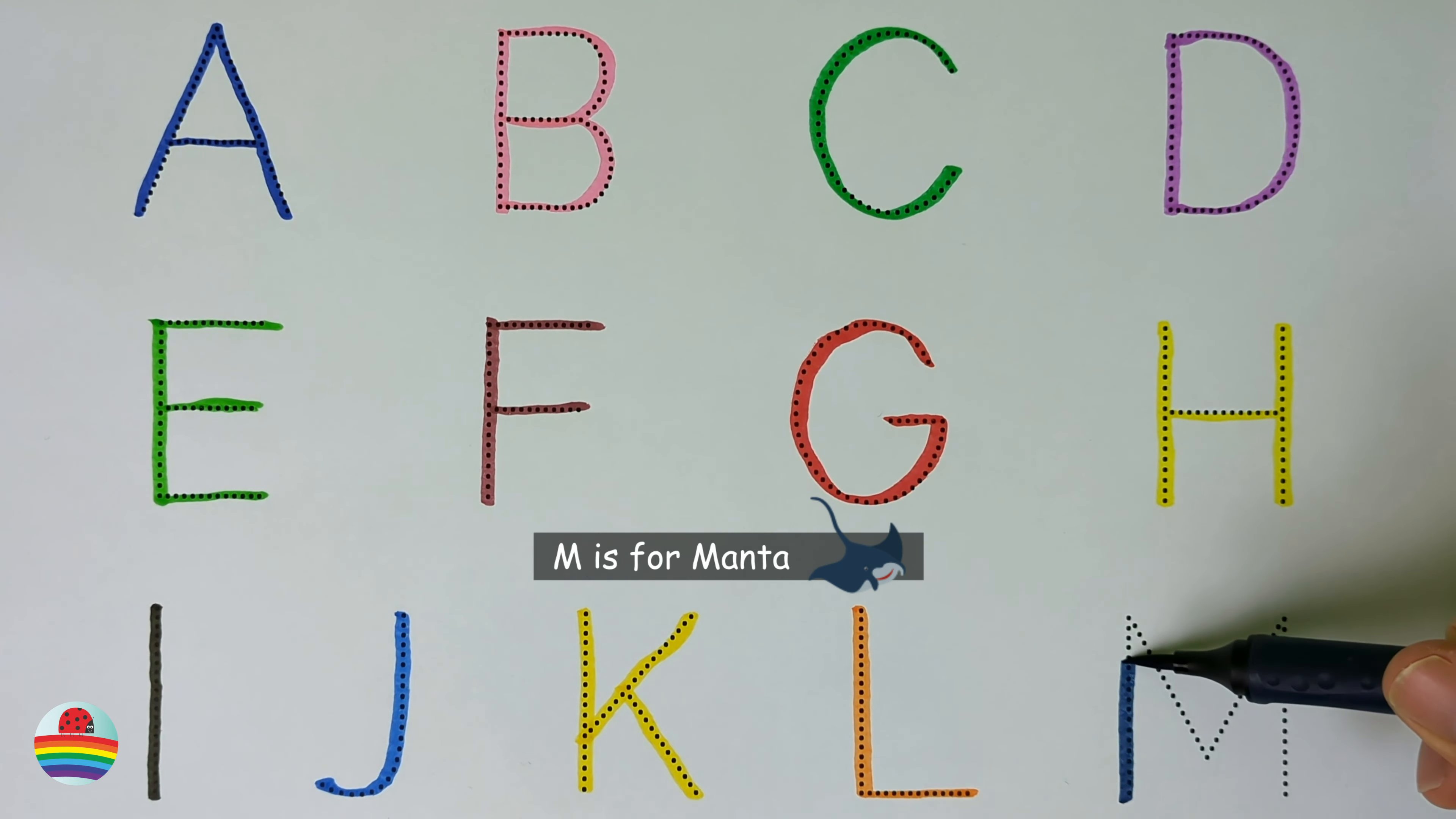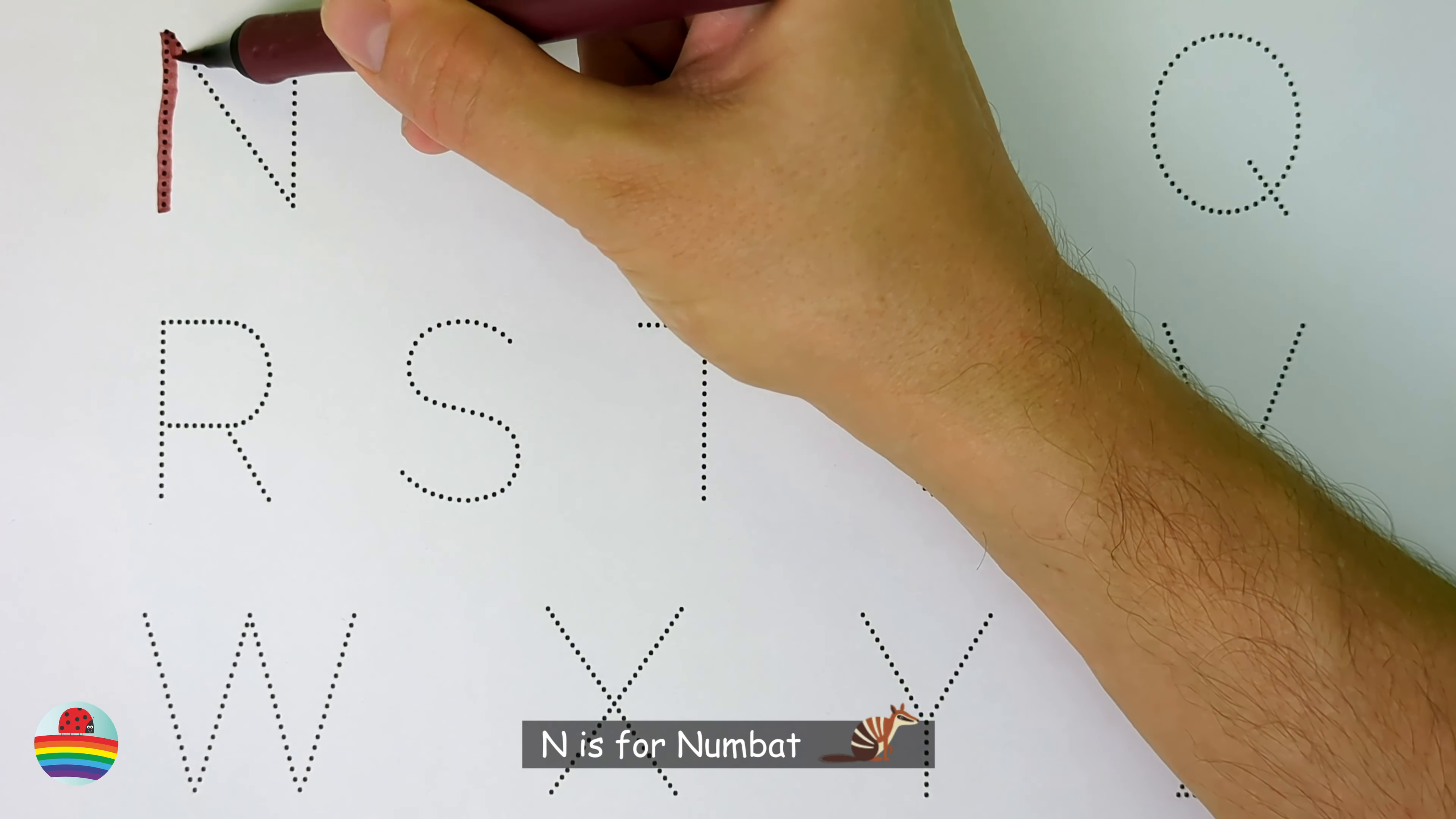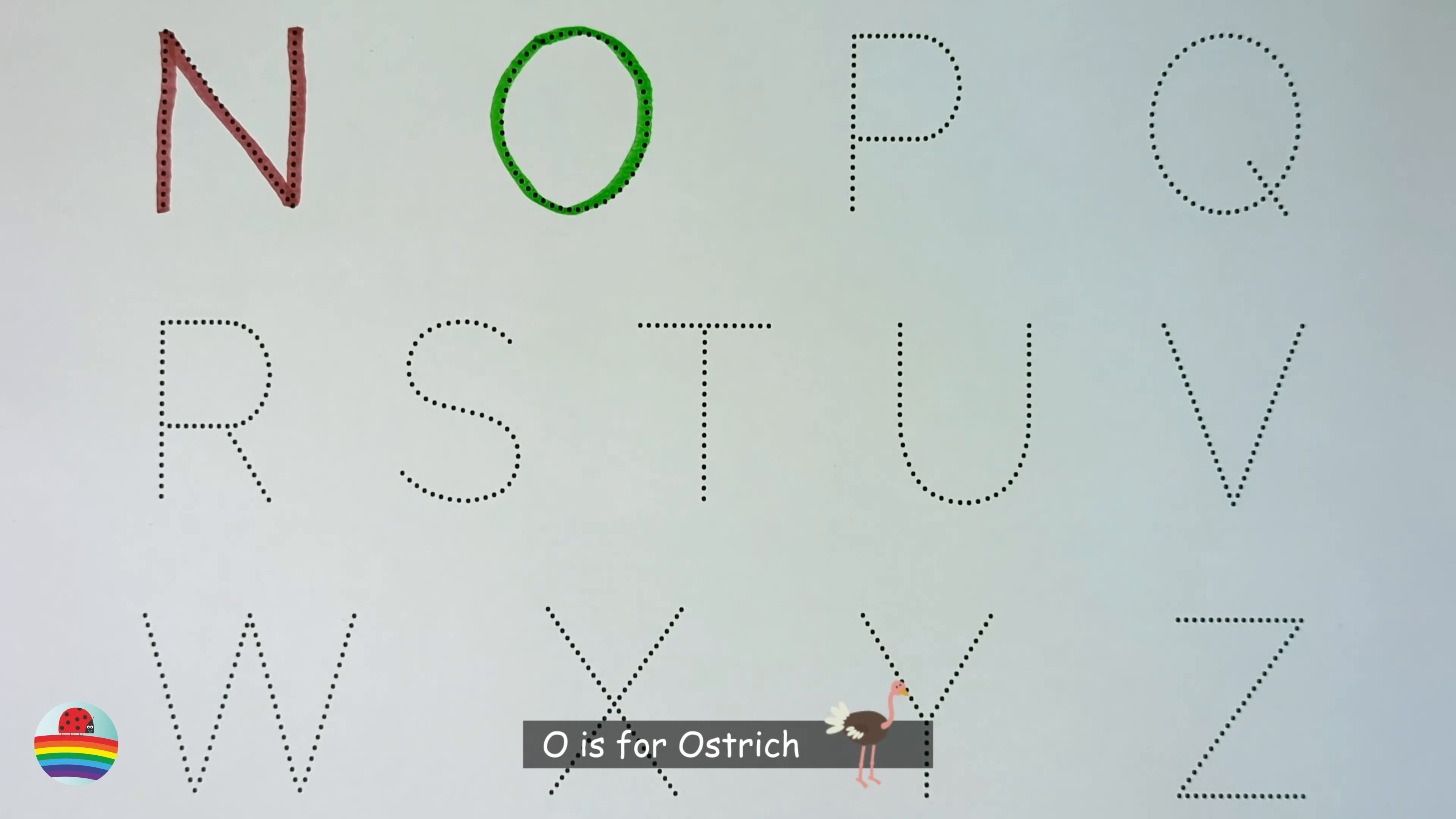M. M. M is for manta. M. N. N is for numbat. N. O. O is for ostrich. O.